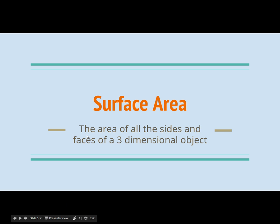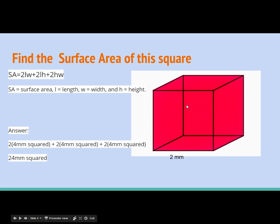Surface area is the area of all the sides and the faces of a three-dimensional object. Here's an example of a three-dimensional object. We actually have a depth now added to our height and our length — so length, height, and depth, or we can also call this width. The surface area formula is: two times the length and the width, plus two times the length and the height, plus two times the height and the width. By doing this formula, we will get all of the sides of this object. We're going to use this formula so we can apply it to different objects as well.